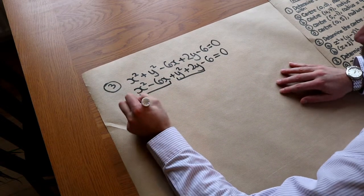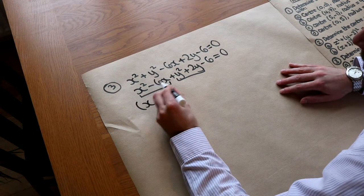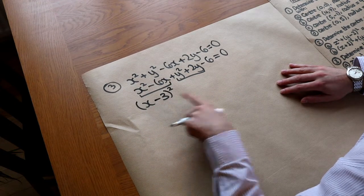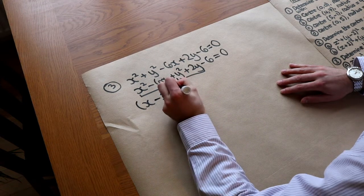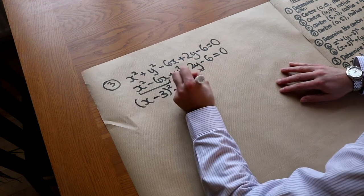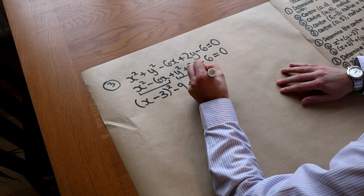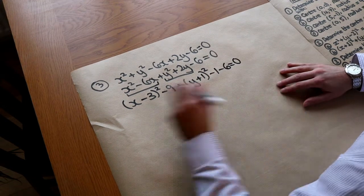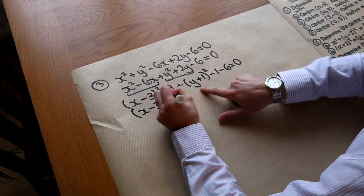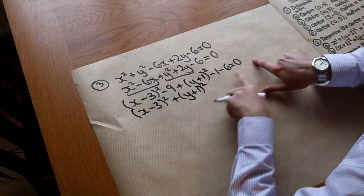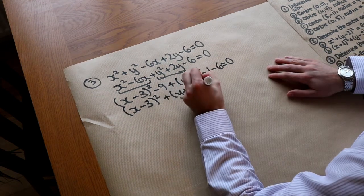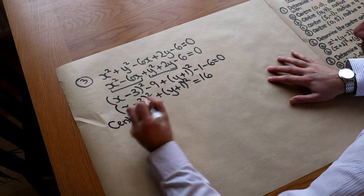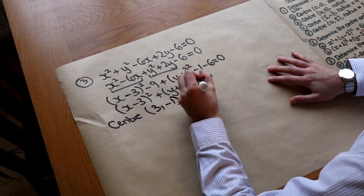To complete the square: open a bracket, write X, then halve the coefficient of X, giving (X minus 3) squared, then subtract 9 to compensate. For Y: half of 2 is 1, giving (Y plus 1) squared, then subtract 1. We get (X minus 3) squared plus (Y plus 1) squared, with everything else on the other side: minus 9 minus 1 minus 6 equals minus 16, which becomes positive 16. The centre is (3, minus 1) and the radius is 4.